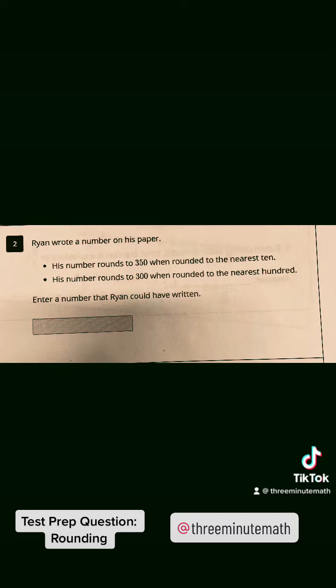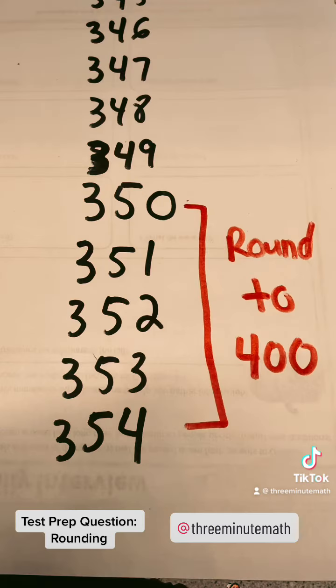Going back to our original problem, we have already solved which numbers will round to 350 when rounded to the nearest 10. Now we need to go back and figure out which numbers will round to 300 when rounding to the nearest 100.